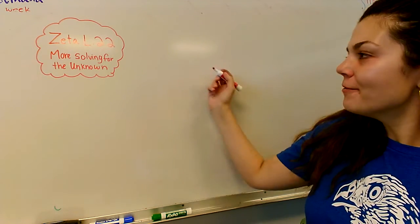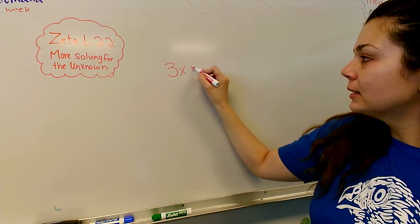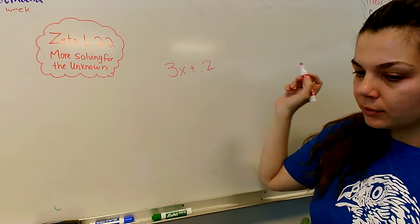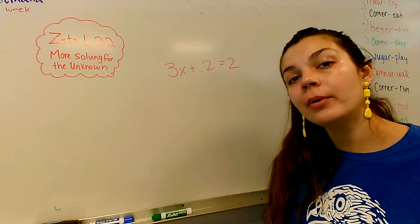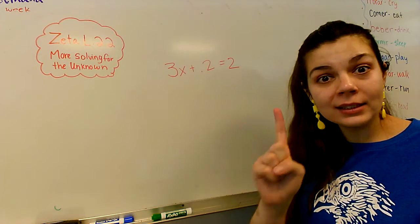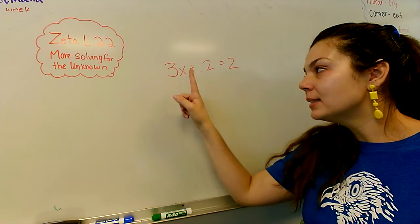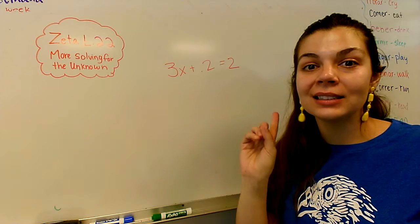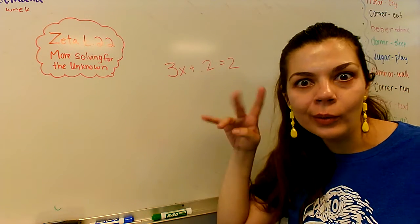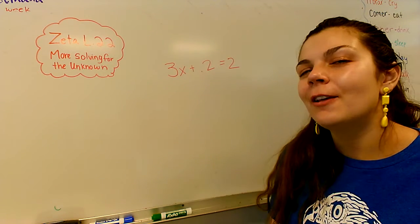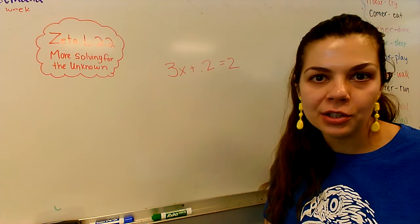All right. So the first one we're going to go over: 3x plus 0.2 equals 2. Whenever we're solving for the unknown, what's our number one thing we're going to do? Get the x by itself. The x is our number one goal. That's the variable, our unknown. So what's the first thing we're going to do? What doesn't have anything to do with the x?